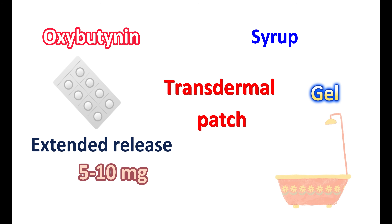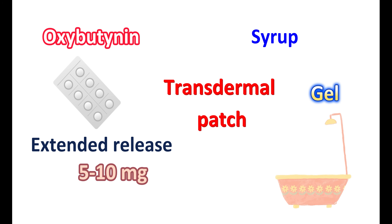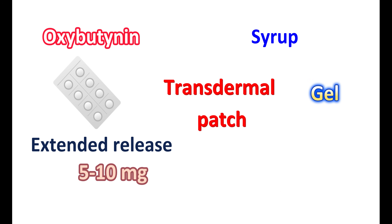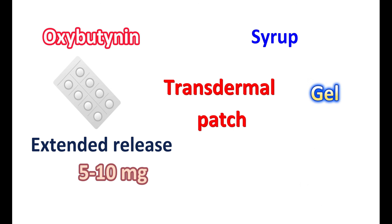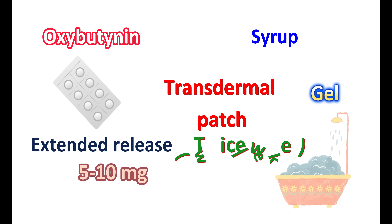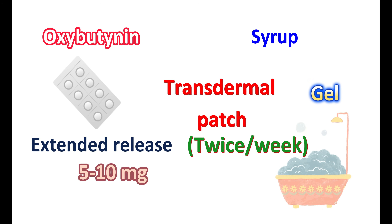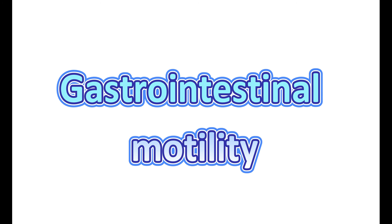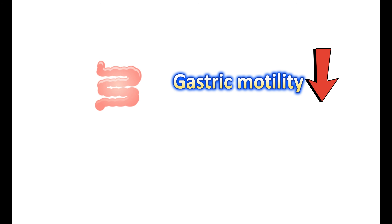When using the gel or transdermal patch, apply it to dry skin. For the gel, avoid showering for at least one hour following application. The gel can be applied on the abdomen, thigh, or upper arms, but the application site should be rotated each time — avoid the same site on consecutive days. For the transdermal patch, one patch should be applied twice per week, but do not cut the patch, as it is intended for single use.